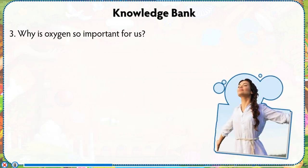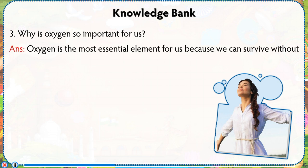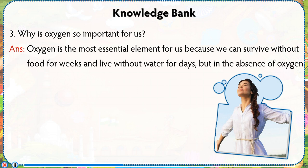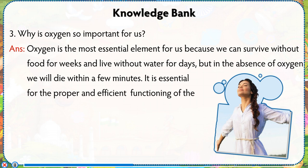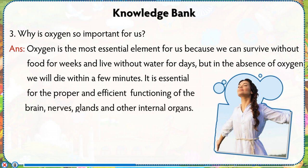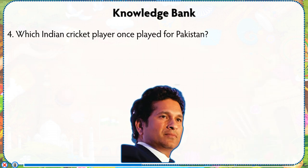Number 3: Why is oxygen so important for us? Answer: Oxygen is the most essential element for us because we can survive without food for weeks and live without water for days, but in the absence of oxygen we will die within a few minutes. It is essential for the proper and efficient functioning of the brain, nerves, glands and other internal organs.